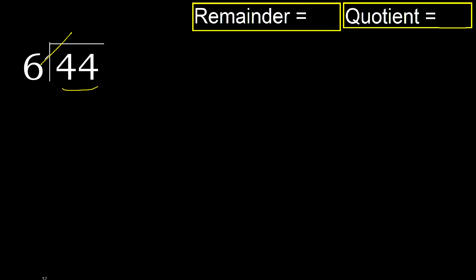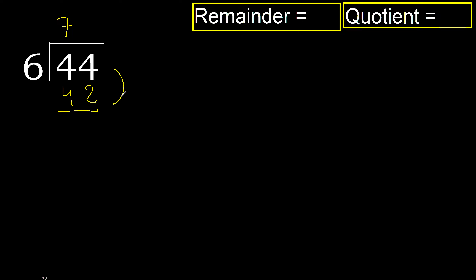6 multiplied by 8 is 48, which is greater. 6 multiplied by 7 is 42, which is not greater. Subtract: 44 minus 42 equals 2. Move to the next digit.